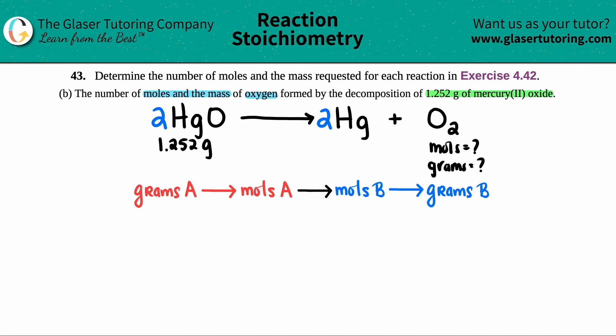So now basically to go from one compound, I signified those as A's to go to a new compound is B's. You go from grams to moles, to moles, to grams. You can only convert from one compound to another using a mole to mole ratio, which we will get to in a little bit. But basically what was our starting here? Well, they told us that we had a start of 1.252 grams of HgO.